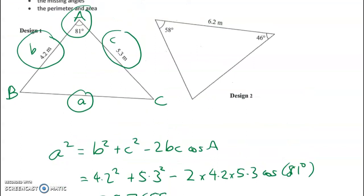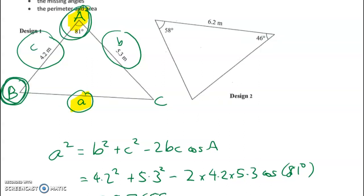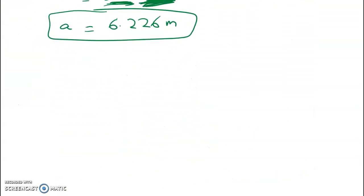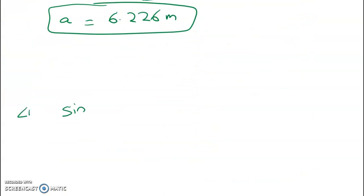So angle B - well I've got this and now I've got this, so that means I'm good to do the sine rule. I've just noticed a really stupid mistake in here, which is of course that this should be side length c and this... I've got a matching pair of length and opposite angle, so I'm good to go with the sine rule. Sine B over 5.3 equals sine of 81 degrees over 6.226. Sine B works out to be 0.840788.